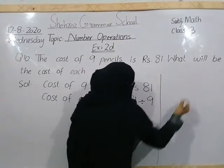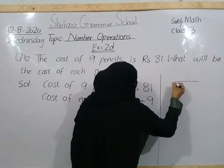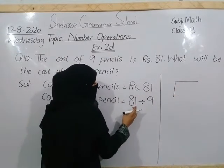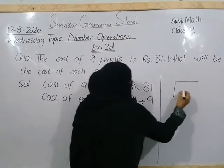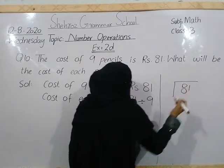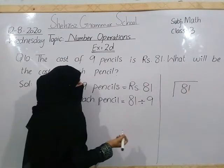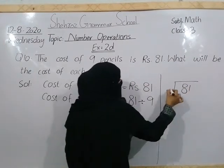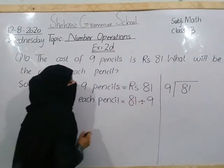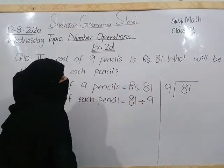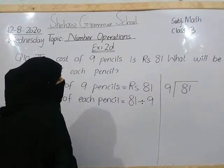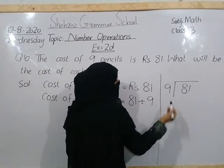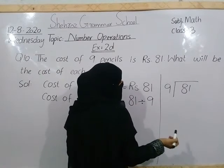तो हम divide करेंगे — यह division का sign. इसमें students, 81 हमारा dividend है, तो हम उसे division sign के अंदर दिखेंगे, और 9 हमारा divisor है, उसे बाहर दिखेंगे. 9 हमारा divisor है, इसका table हमने read करना है, ठीक है?